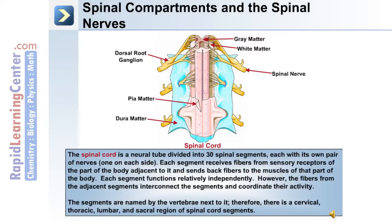The spinal cord is a neural tube divided into 30 spinal segments, each with its own pair of nerves, one on each side. Each segment receives fibers from sensory receptors of the adjacent body part and sends back fibers to the muscles for motor function. Each segment functions relatively independently; however, fibers from adjacent segments interconnect and coordinate their activity.